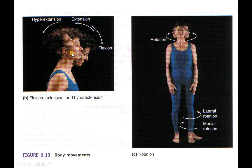Same thing here. The head's in a neutral position. When you look down, that's flexion. When you look up and the head goes back, that's extension. But once you get into tissue deformity — like whiplash, for example — now you're getting into hyperextension.